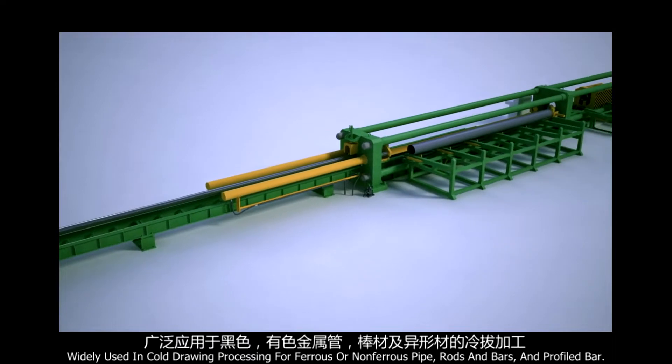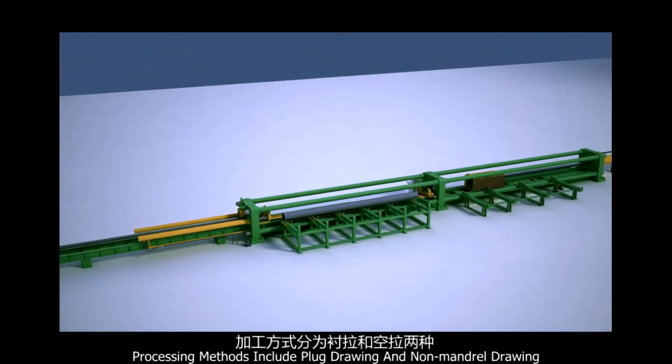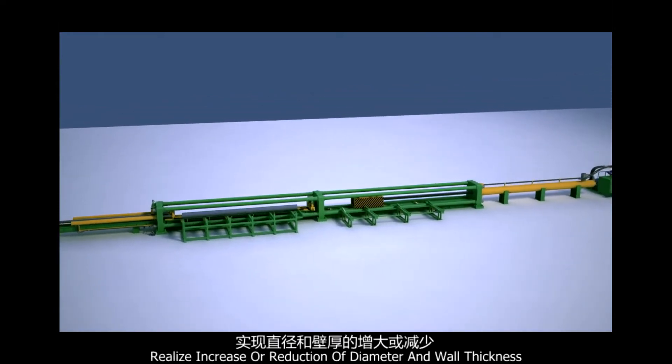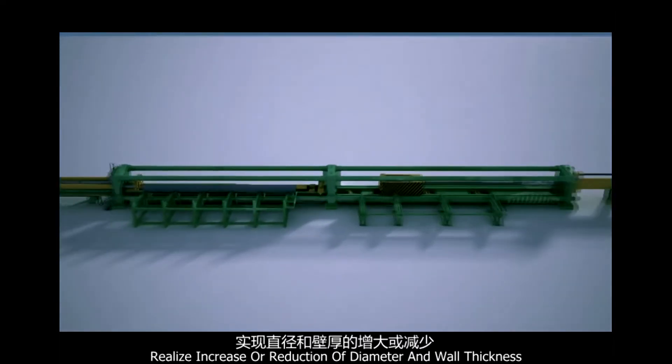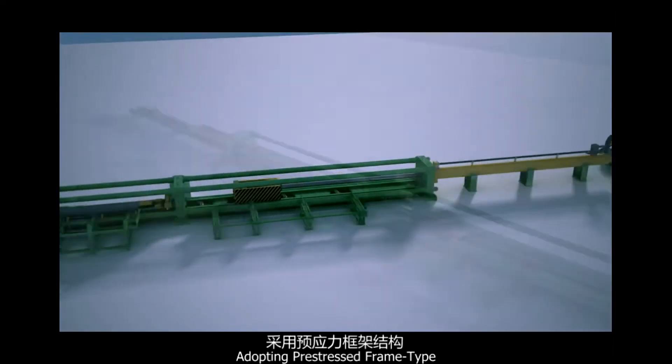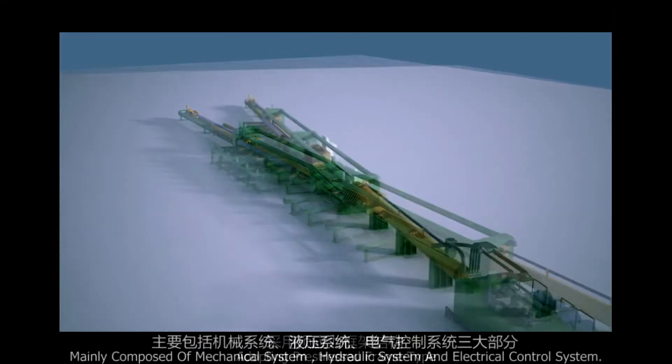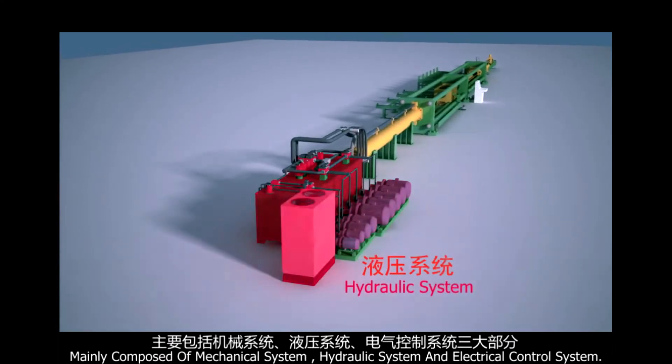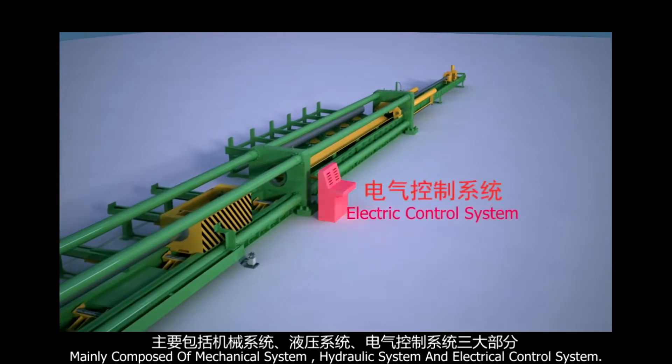Processes pipes, rods, bars, and profile bars. Processing methods include plug drawing and non-mandrel drawing, realizing increase or reduction of diameter and wall thickness. Adopting pre-stressed frame type, mainly composed of mechanical system, hydraulic system, and electrical control system.